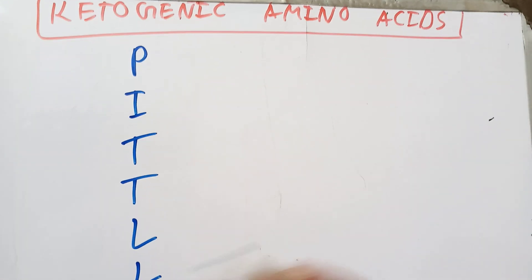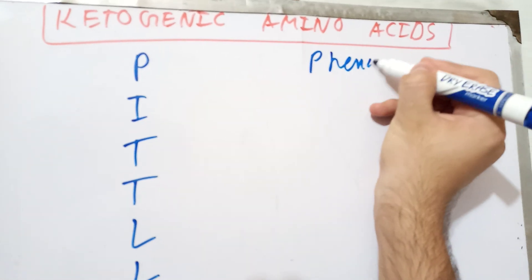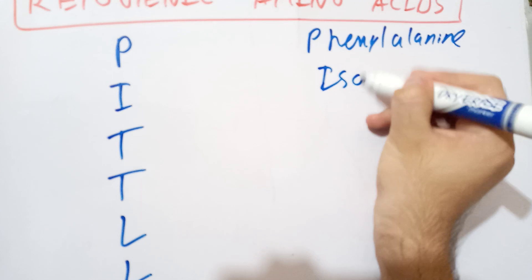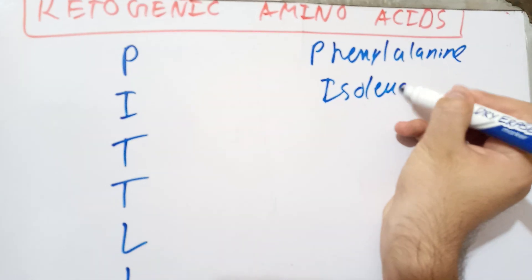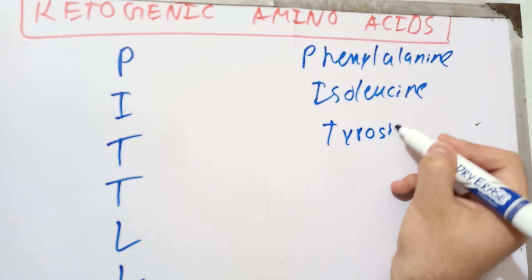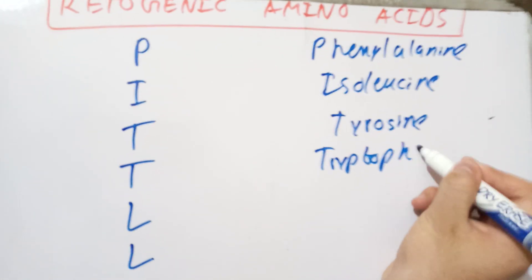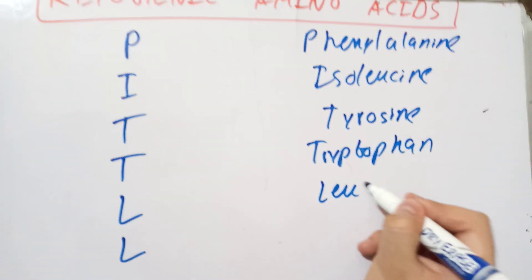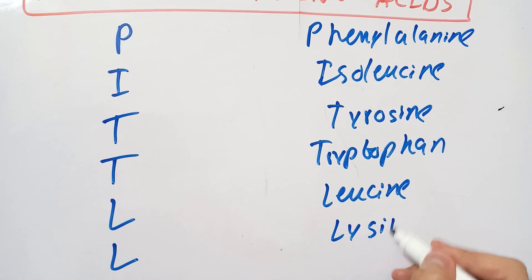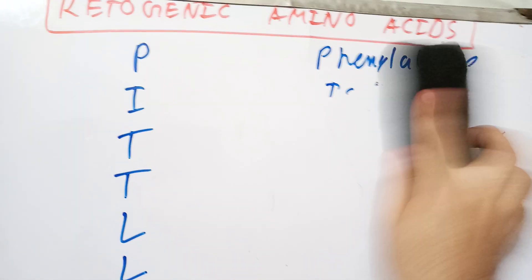First there is phenylalanine, the second is isoleucine, the third is tyrosine, then tryptophan, leucine, and lysine. Let's talk about them one by one.